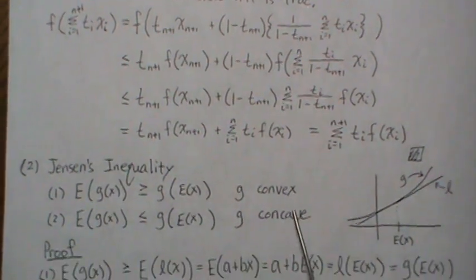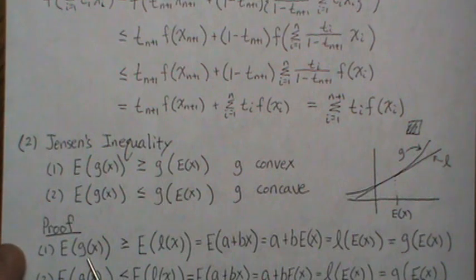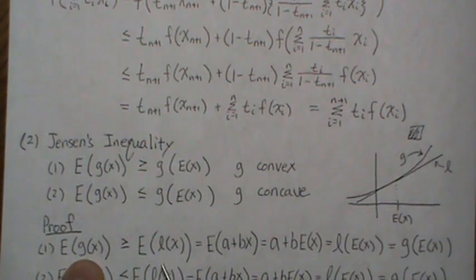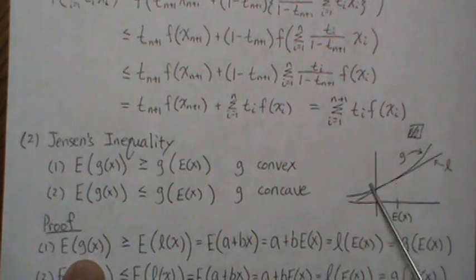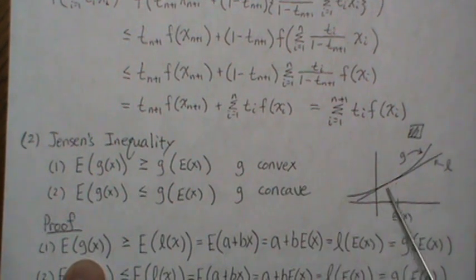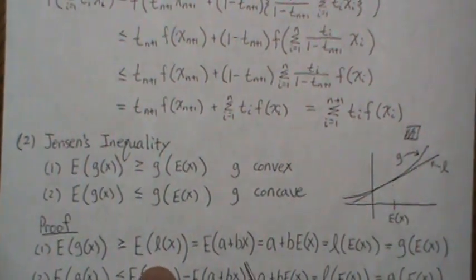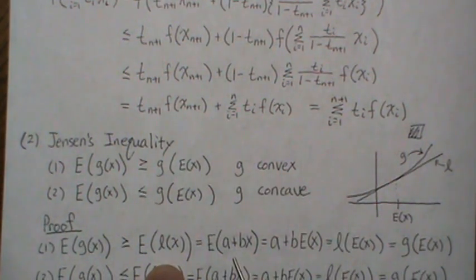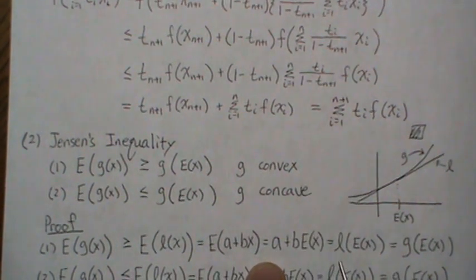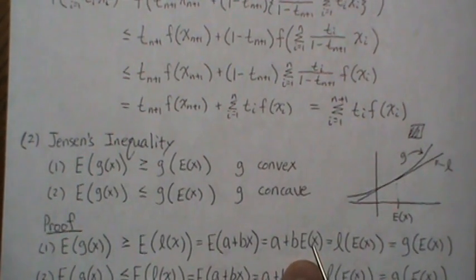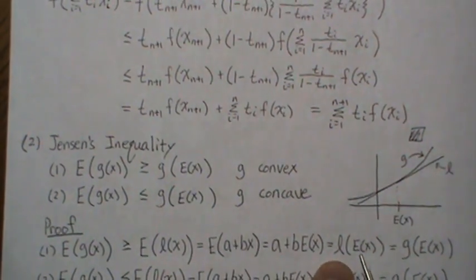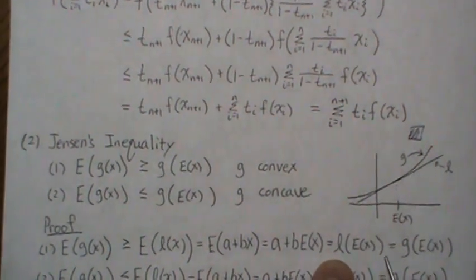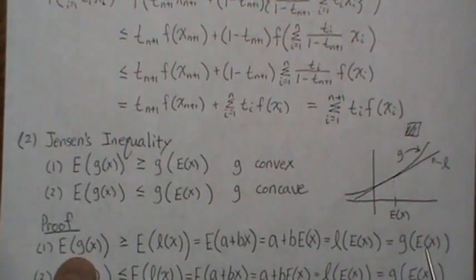Concave means the function is bowl-shaped facing down. Let's prove this. The expected value of G(x) is always greater than the expected value of L(x), where L(x) is the tangent line, since G is always above that line. The tangent line can be written as a + bx for some a and b. Taking the expected value gives E[a + bx] = a + b*E[x], which is just L evaluated at E[x].